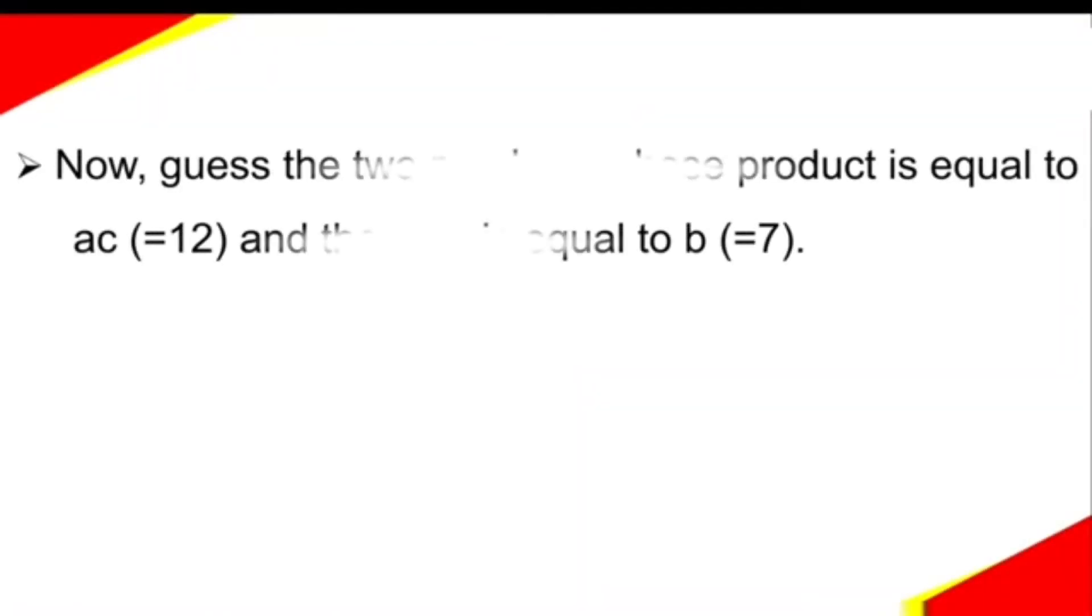Now, guess the two numbers whose product is equal to ac, that is 12, and the sum is equal to b, that is 7. Can we guess? Yes, we may guess for few problems but not for every problem. Then, how do we get the two numbers? We can get the two numbers with the following process.